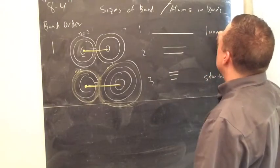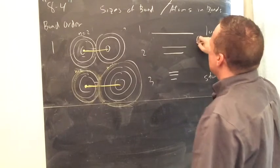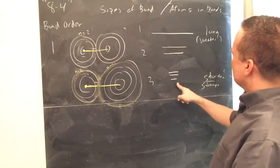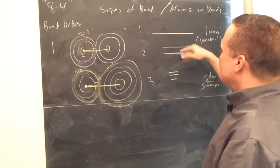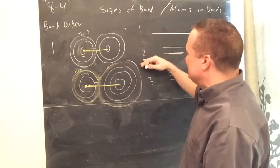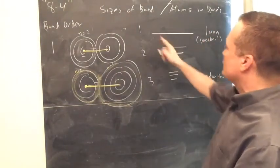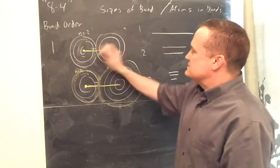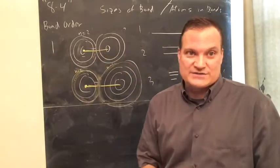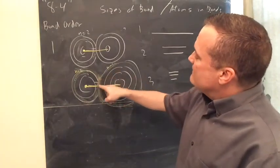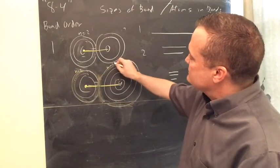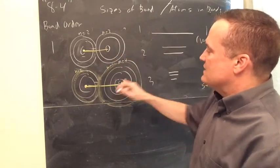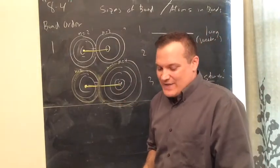A longer bond is weaker. A single bond is longer and weaker; a triple bond is shorter and stronger. And anywhere in between — 1.5, 1.3, 2, 2.5 — as bond order increases, the bond gets stronger and shorter. That's the relationship for bond order. The carbon-selenium bond is longer because of the N=4 versus N=2 shells, not because of bond order — both are single bonds.